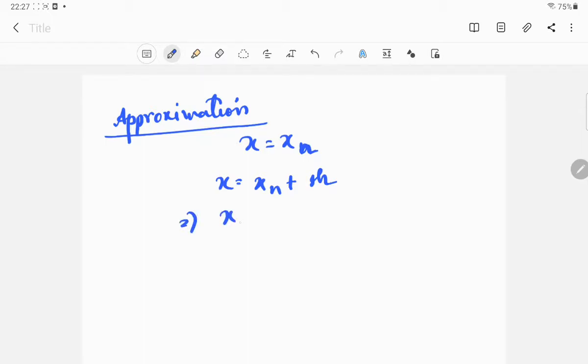So now what we will do is approximation. We will do approximation where x equal to x_n. This time we don't have x naught, we have x_n.